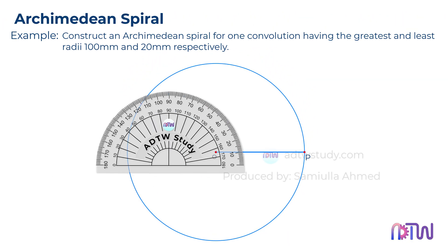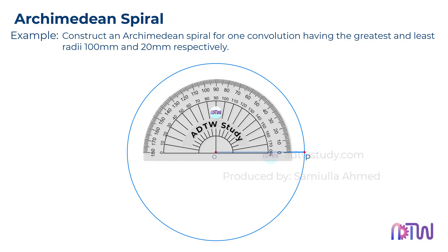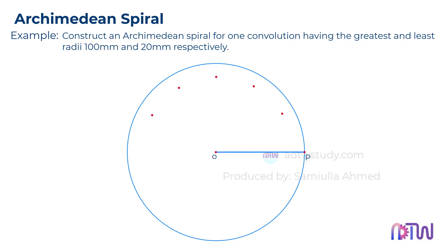To do so, take a protractor and mark 30 degrees, 60 degrees, 90 degrees, and so on to get 12 equal parts. After this, divide the circle using these points.